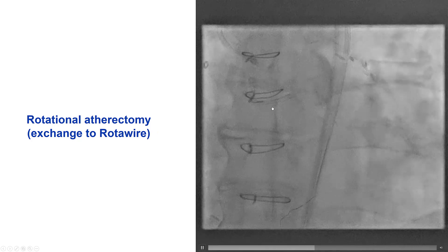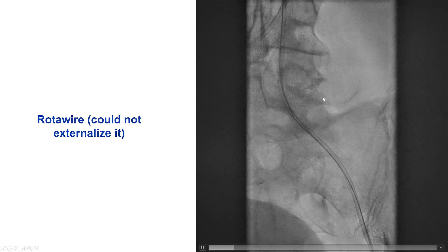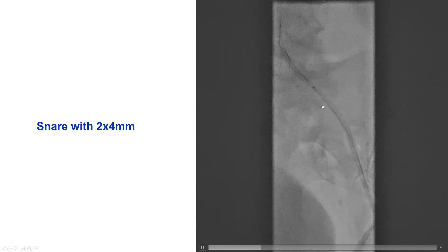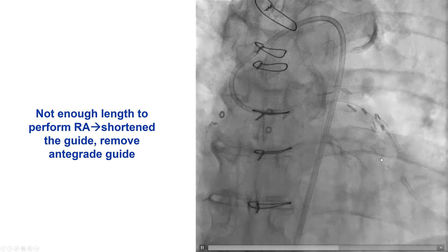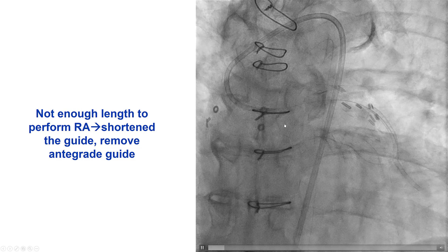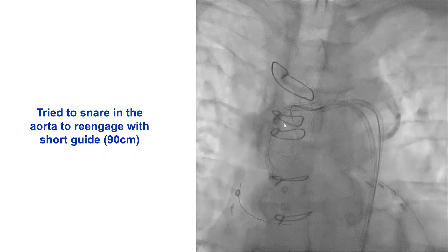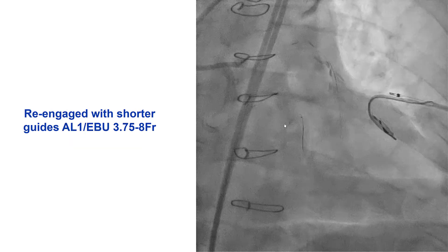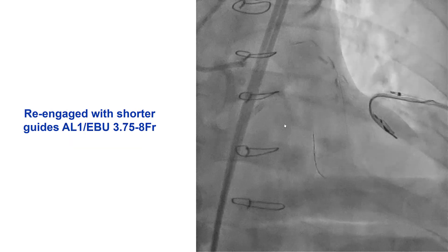Unfortunately, we had a lot of difficulty with atherectomy. We advanced the retrograde Rotawire after getting the retrograde microcatheter to go into the antegrade guide catheter, but then the Rotawire could not come out. We had to snare it with a small 2.4 mm snare — very, very challenging. We eventually externalized it, but then had a lot of difficulty loading the Rotablator over the wire, as we had very little wire come out. Part of the problem was that in the beginning we had used 100 cm long guide catheters instead of 90 cm, which is the default for retrograde cases. We eventually lost everything and decided to start again.